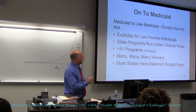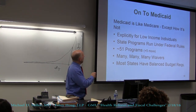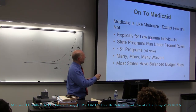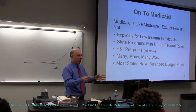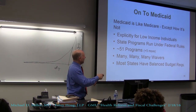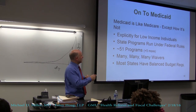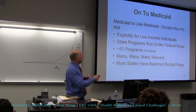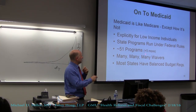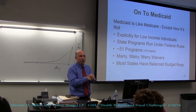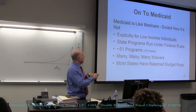Medicaid is like Medicare except for how it's not. A simple way to remember: you Care for the elderly, you Aid the poor. Medicaid is for the low-income. Medicare is a federal program with one big financing system. Medicaid is a state program run under federal rules — so it's essentially 51 programs, plus five more for the territories, with DC counted separately.